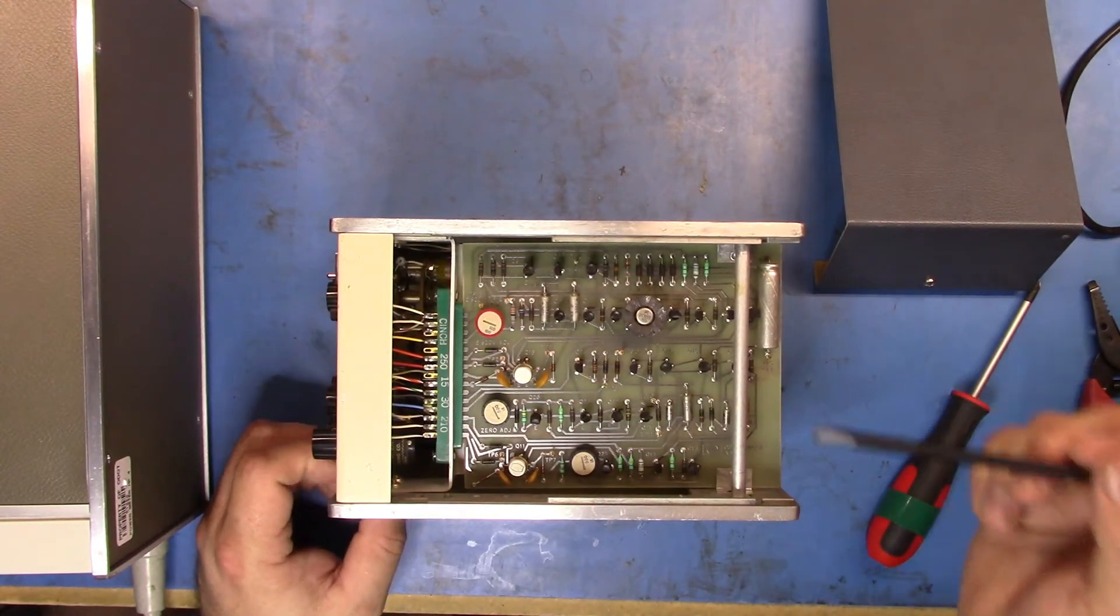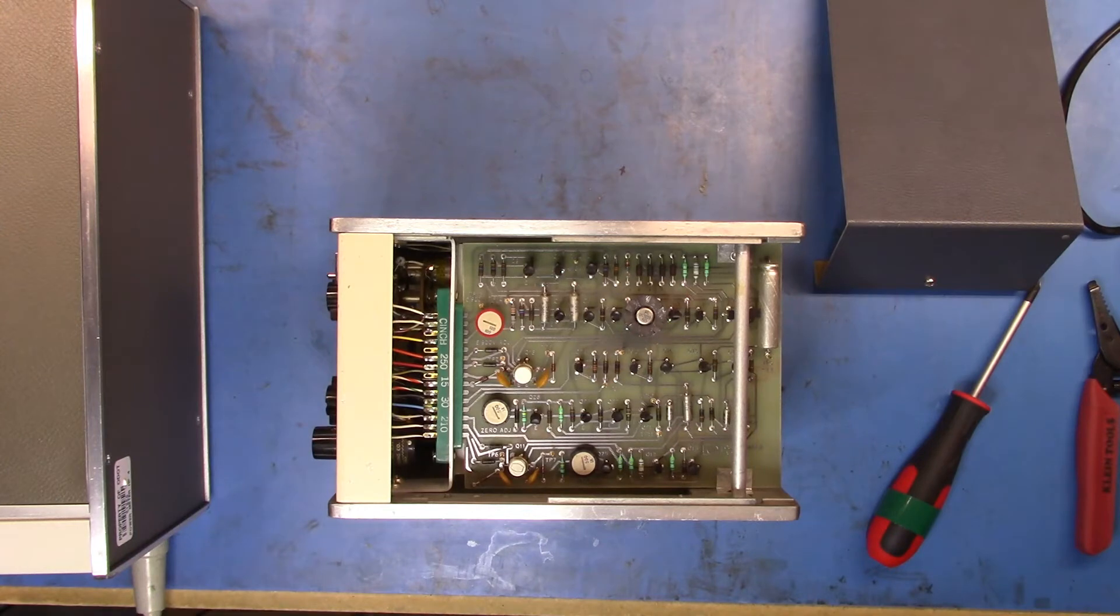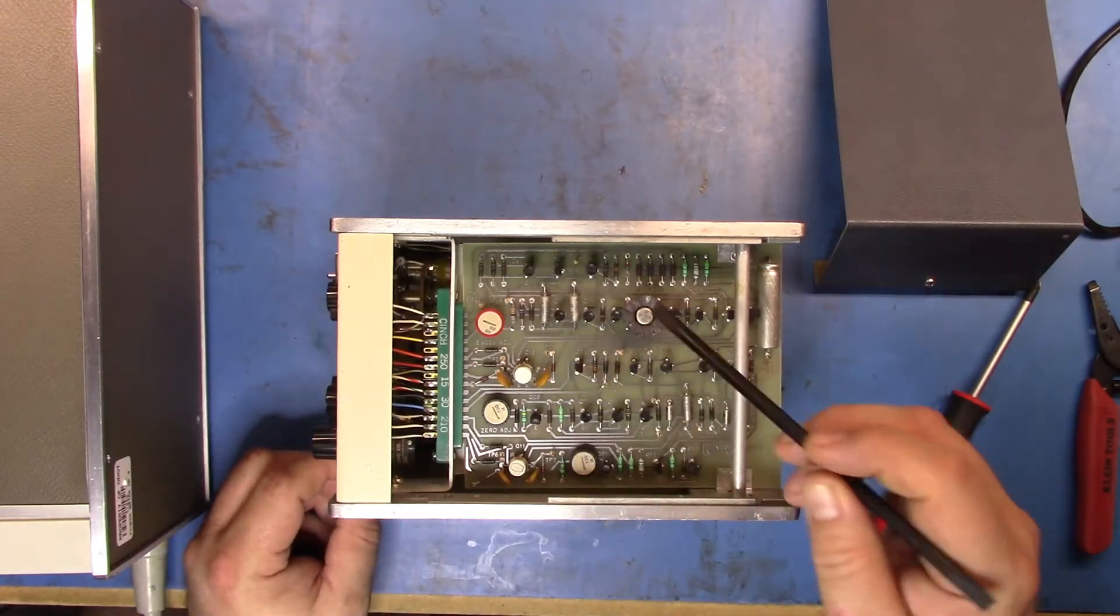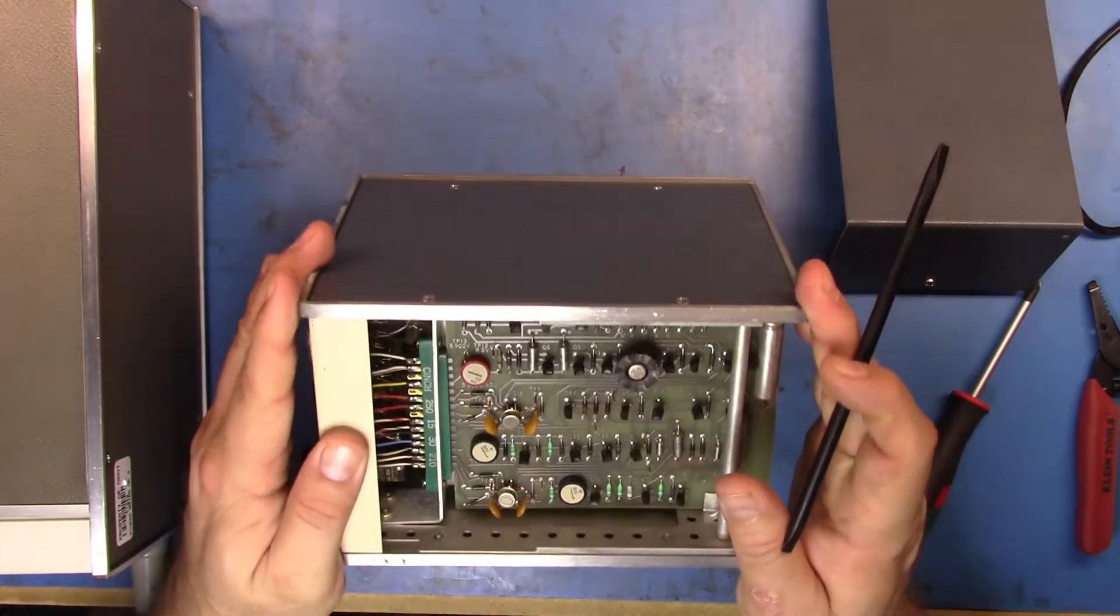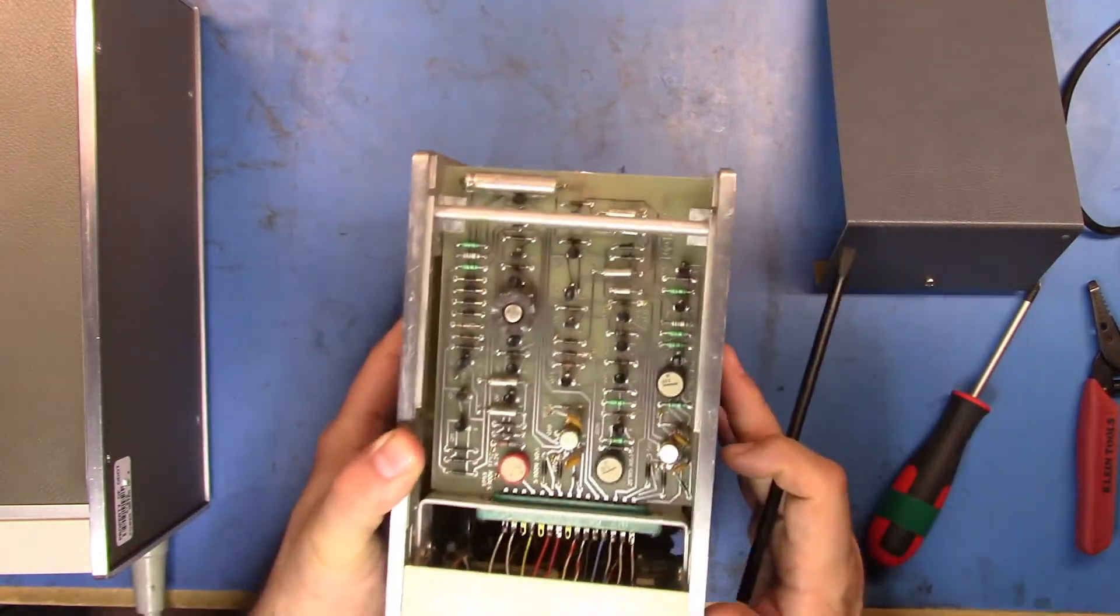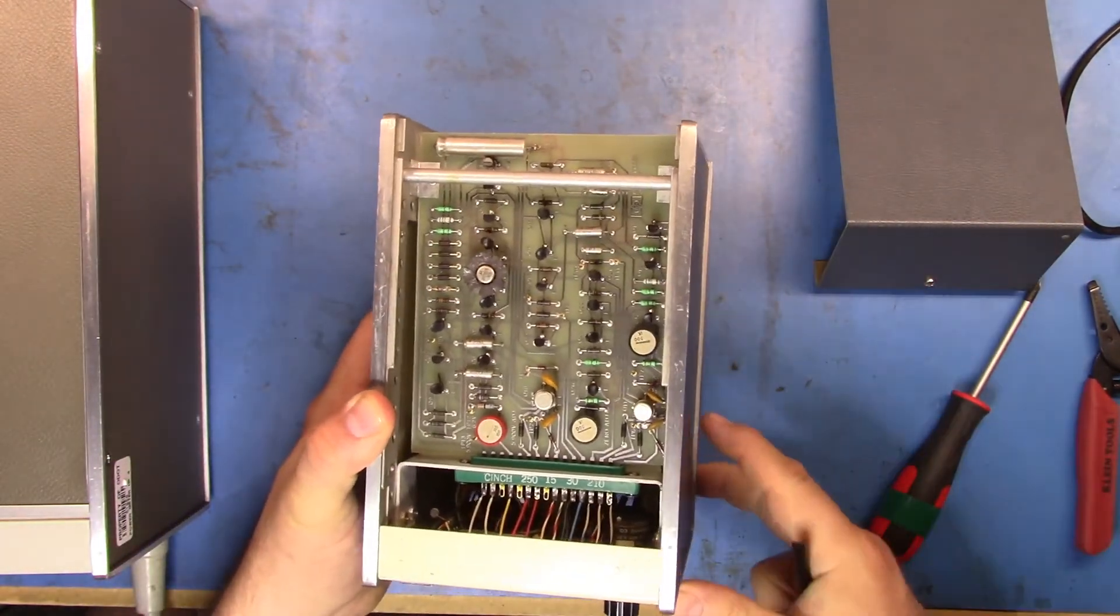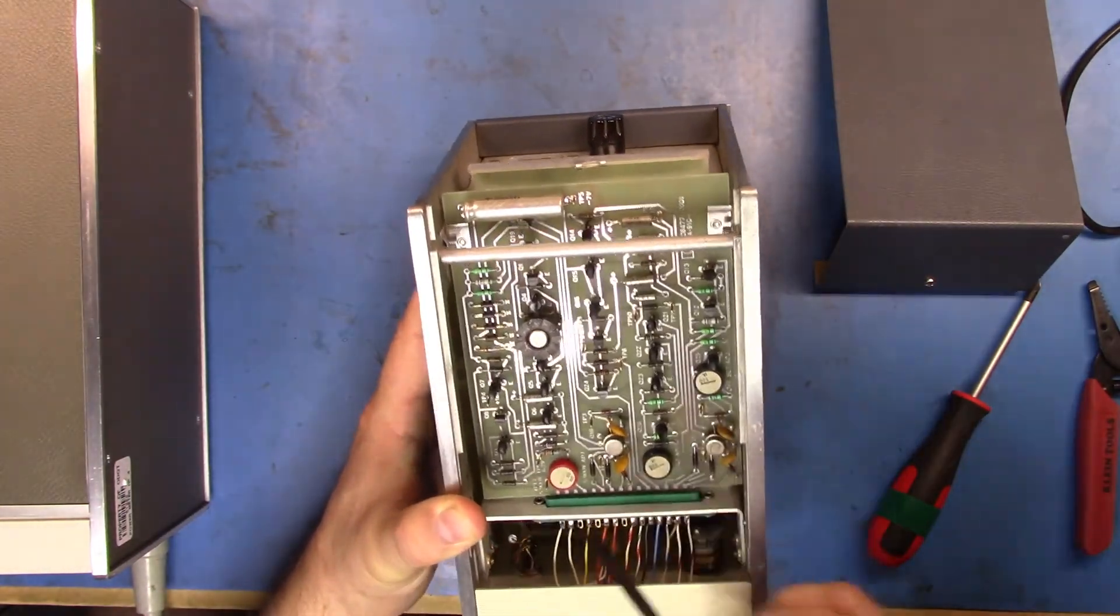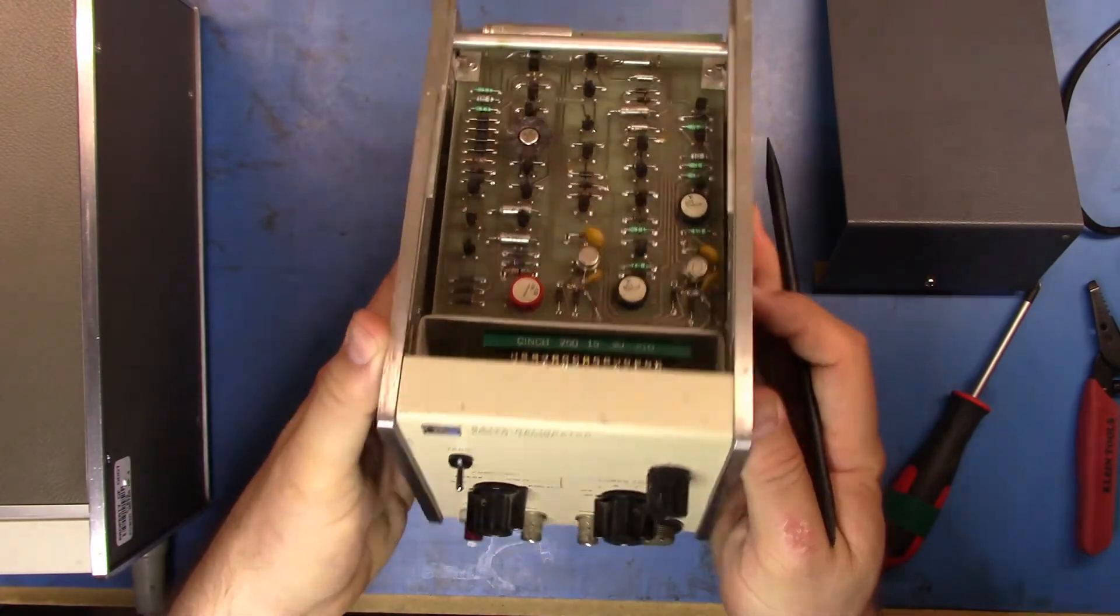Anyway, you can see that that's a fairly standard-looking board for the period. With the lines, it looks to be very easy to repair. So hopefully if there's any issues with this, because I bought this and this was pulled from a working environment, hopefully this should be pretty easy to test and give a try.